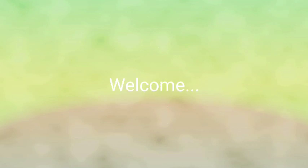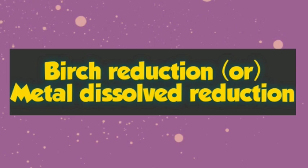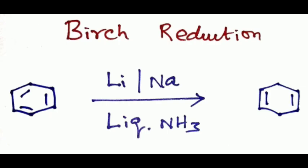Hi friends, in this video we will briefly discuss Birch reduction or metal dissolved reduction. For example, benzene reduced with lithium or sodium in the presence of liquid ammonia to form 1,4-dihydro benzene. This is the very familiar reaction in Birch reduction, where first and fourth position hydrogens are added.